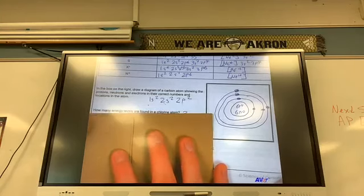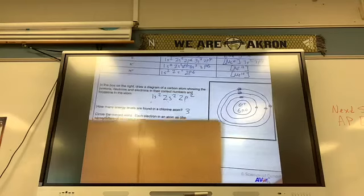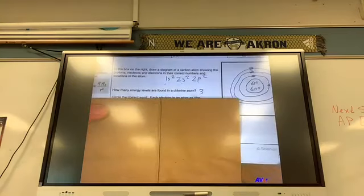How many energy levels are found in a chlorine atom? What would you say for that? Three. Because you have your 1s2, you have your 2s2, 2p6, and you have your 3s2 and your 3p5. So I'd say three.